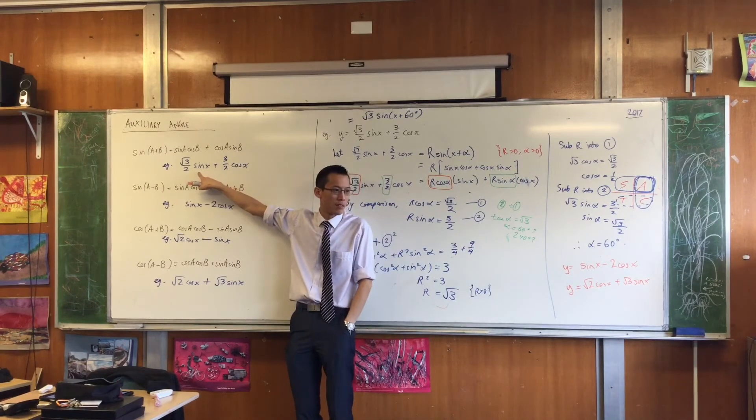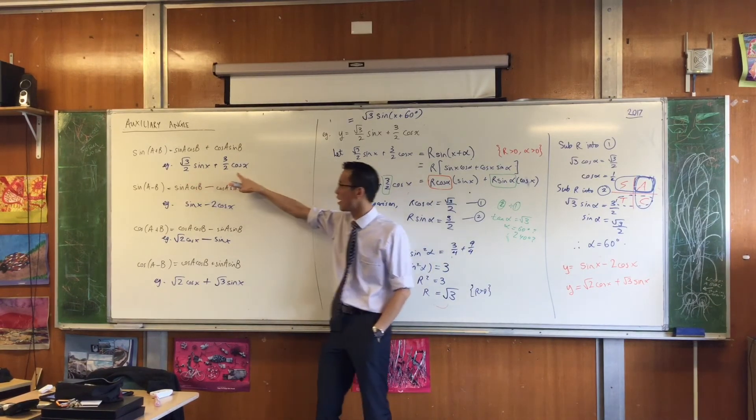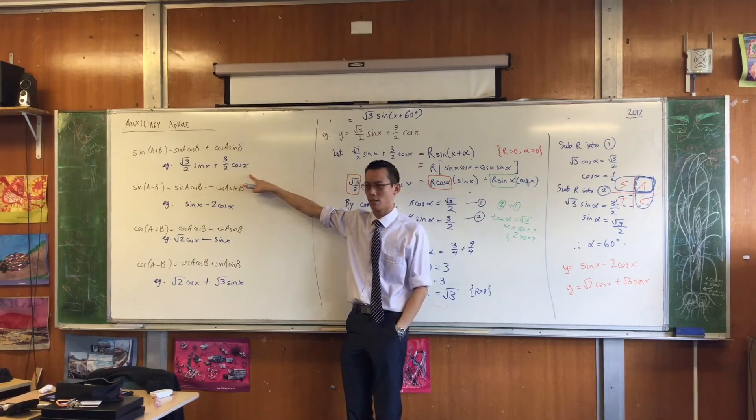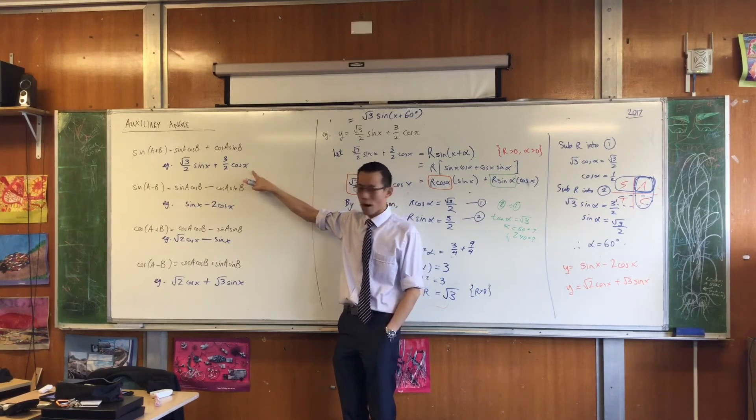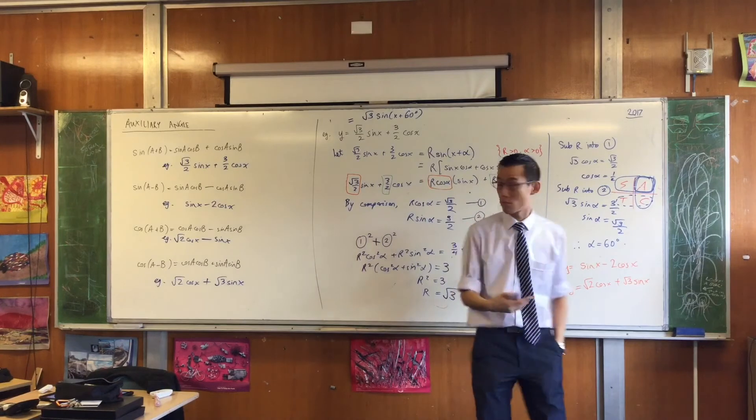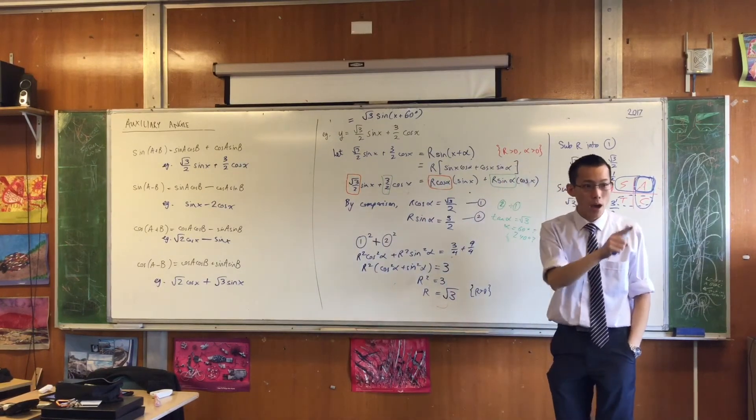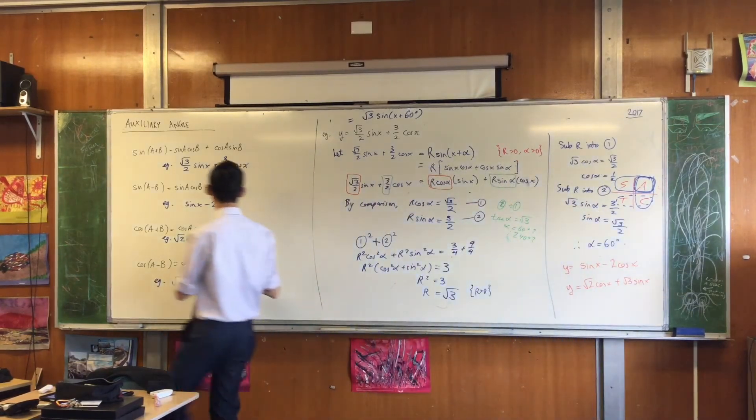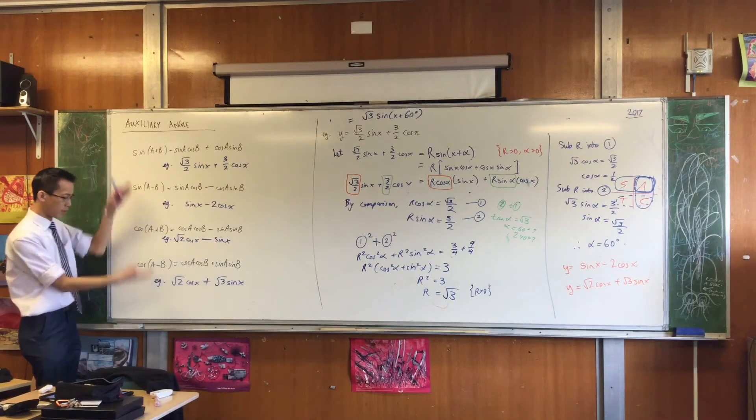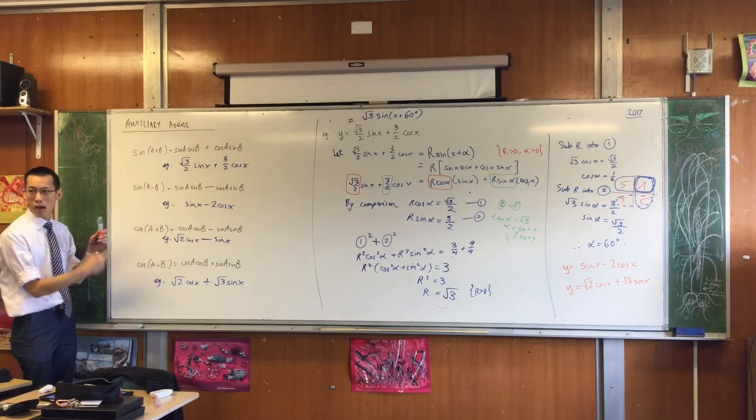Can't I write this as 3 on 2 cos x plus root 3 on 2 sine x? I can, which means, if I had reordered it, which one of these would I use? I'd use the fourth one, wouldn't I?